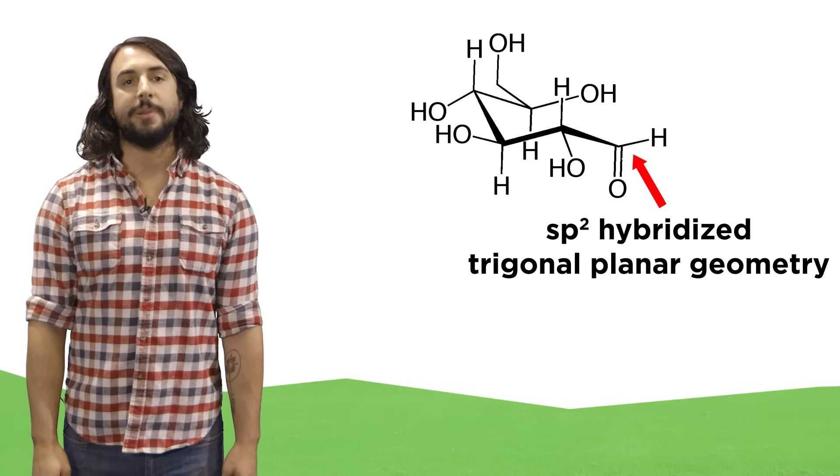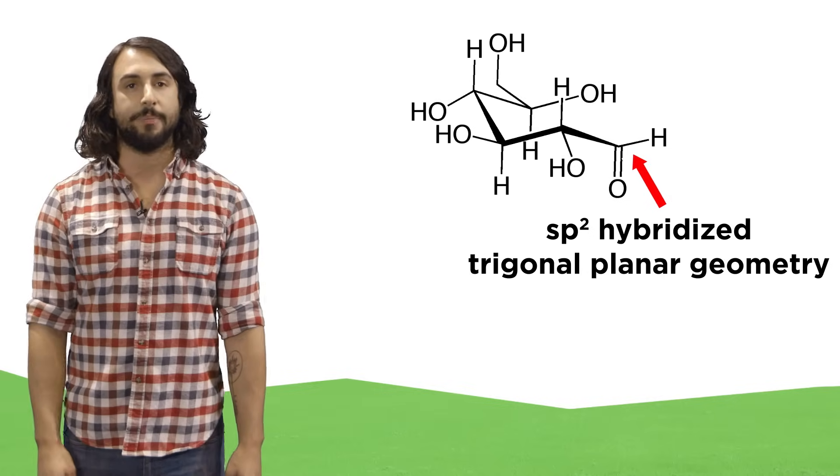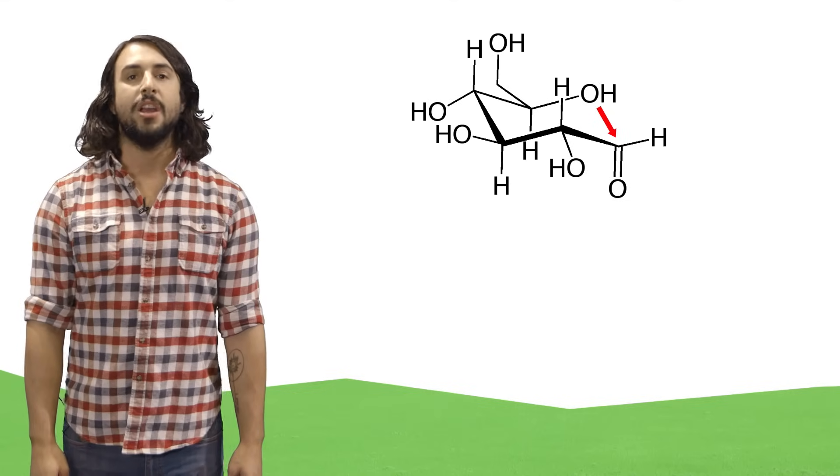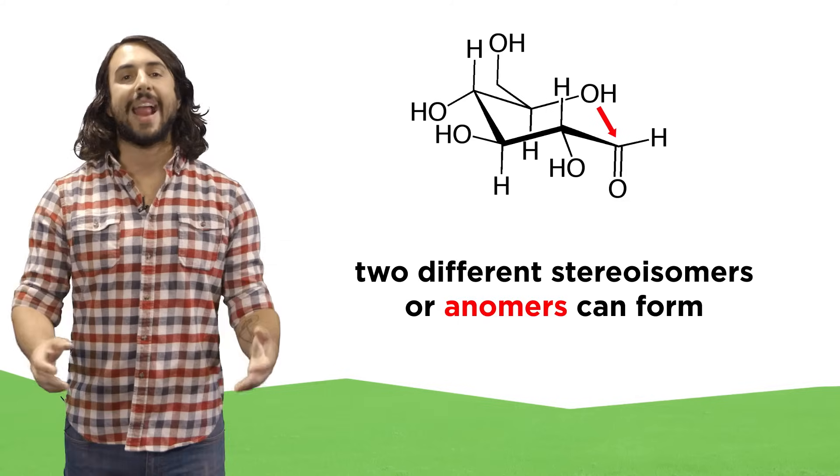We know that carbonyl carbons are sp2 hybridized and therefore exhibit planar geometry. So when the hydroxyl attacks the carbonyl, it can do so from either side, thus generating two different stereoisomers, which are called anomers.